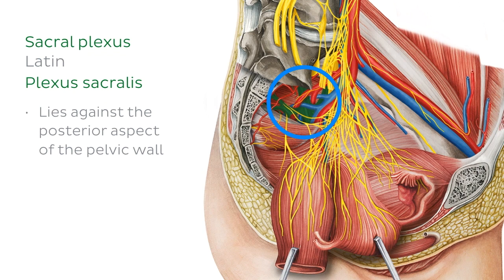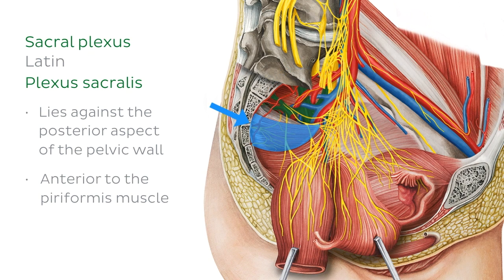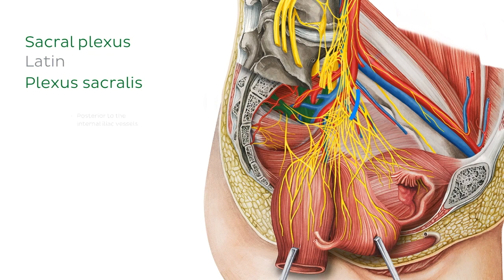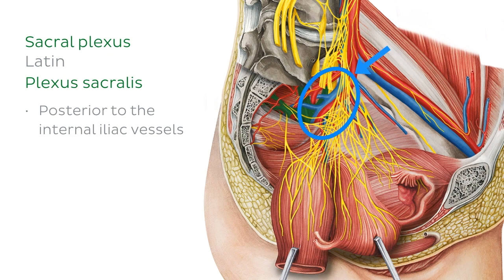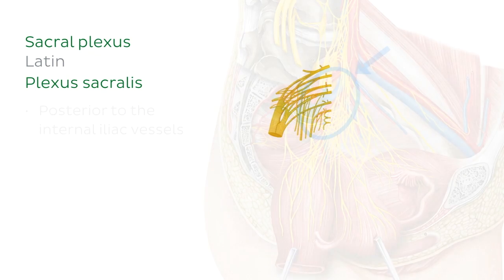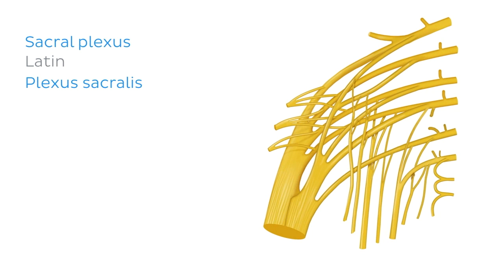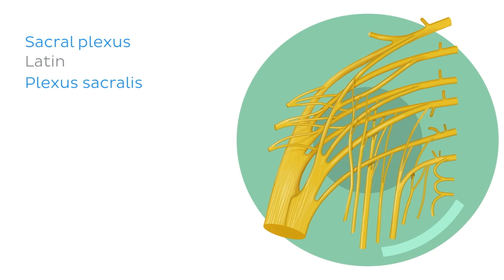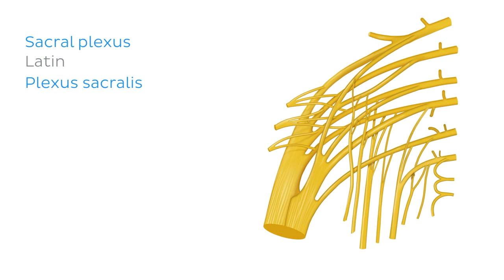It lies against the posterior aspect of the pelvic wall, anterior to the piriformis muscle, and posterior to the internal iliac artery and vein. This is the sacral plexus image that we're going to get really familiar with today. It may look like spaghetti now, but you'll be able to identify each nerve in no time.